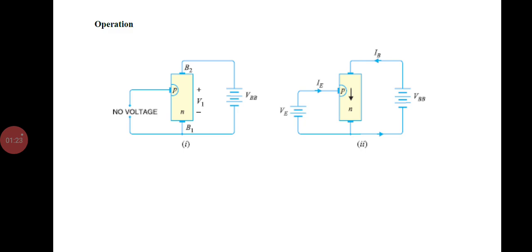When the voltage exceeds V1, the P-N junction becomes forward biased. The holes are injected from P-type through B1 and the device is in the on state. If a negative pulse is applied to the emitter, the P-N junction is reverse biased and the emitter current is cut off, and the device is in the off state.